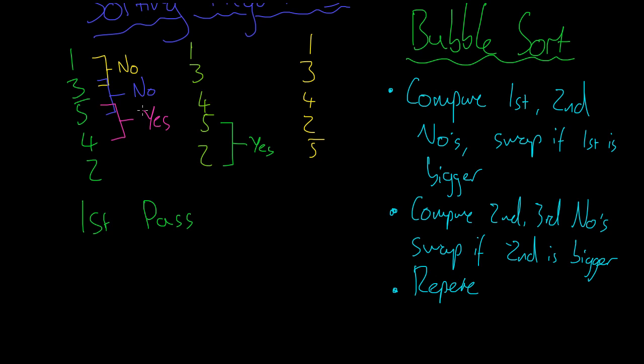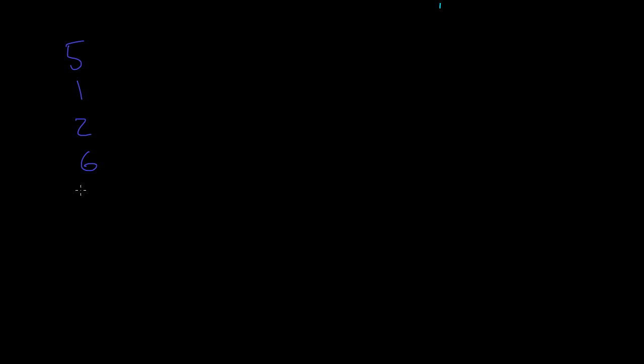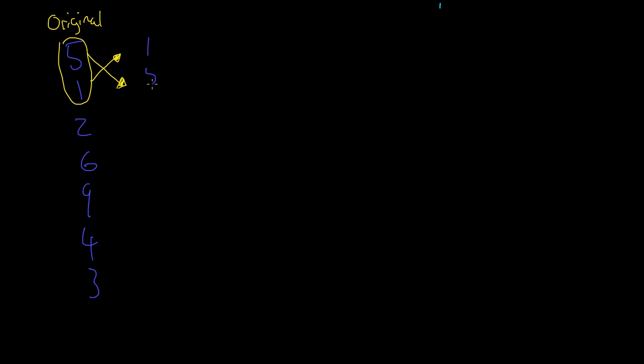Let's do a proper full example. Our list is 5, 1, 2, 6, 9, 4, 3. We call this our original list. The first step is to compare the first and second numbers — 5 and 1 — and swap them if the first is bigger. It is, so we swap. We draw arrows to show the swap and write out our new list: 1, 5, 2, 6, 9, 4, 3. Writing out the full list each time lets you see how it physically changes and helps keep count of comparisons and swaps.